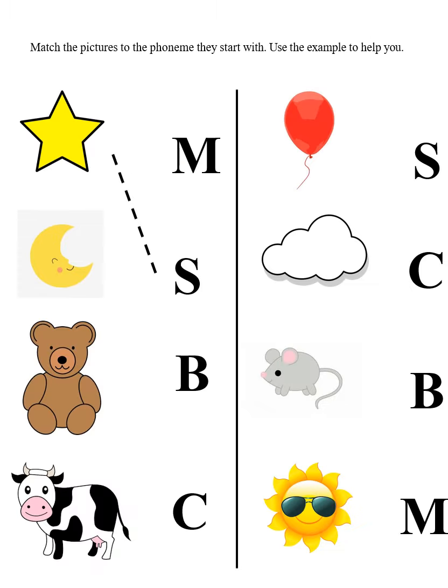Let's practice together. Match the pictures of the vocabulary from the story to the phoneme that they start with. We have one example to help you. The first picture is star. Star. Now, does star go with the m-m-m sound? No. Does it go with the s-s-s sound? Yes. That's why it has a line.